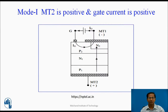Mode 1: MT2 is positive and gate current is positive. When MT2 is positive, P1-N1 is forward biased, P2-N2 is also forward biased, and P2-N1 is reverse biased. The gate injects a number of charge carriers into P2, causing P2-N1 to break down. Current then flows through P1, N1, P2, N2. In this mode, the Triac is more sensitive to positive gate current IG, which is why this mode is recommended for operation.